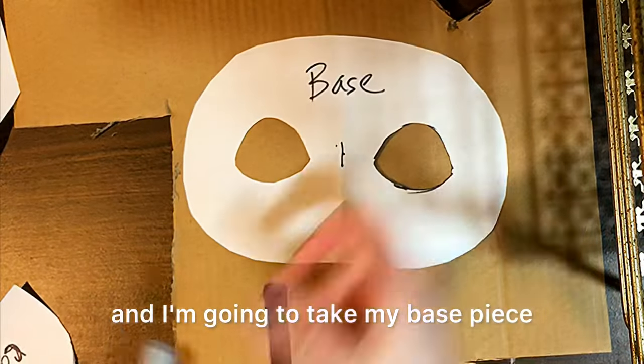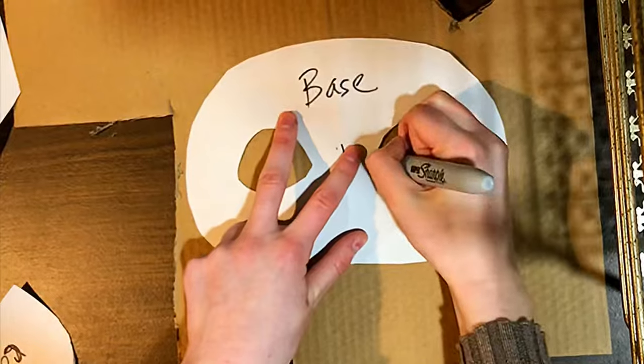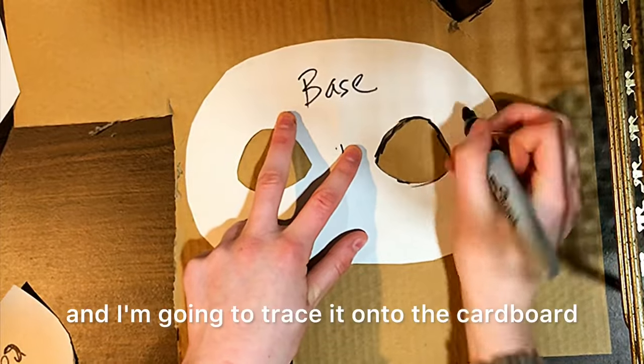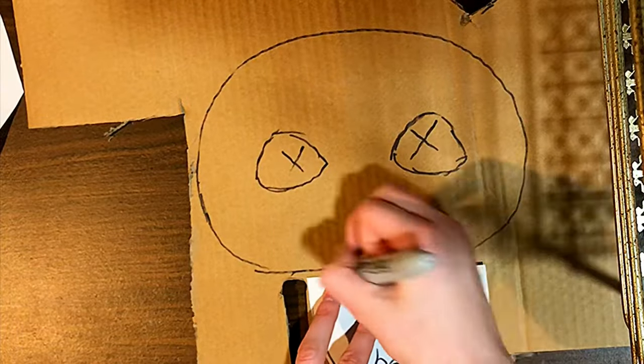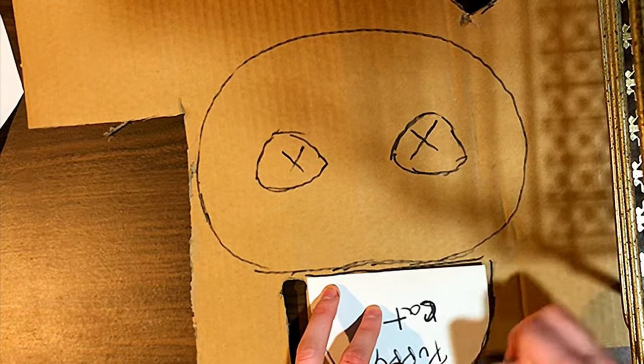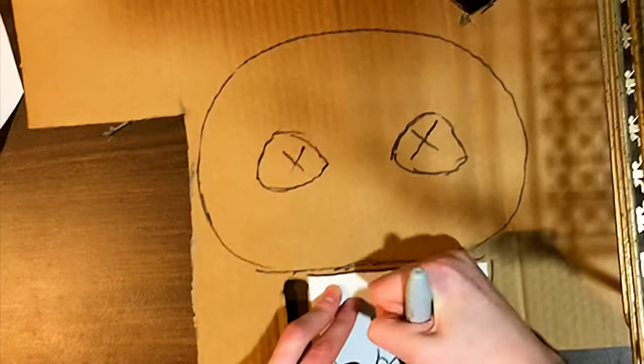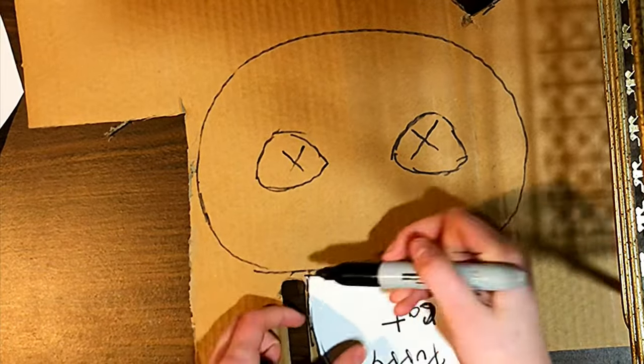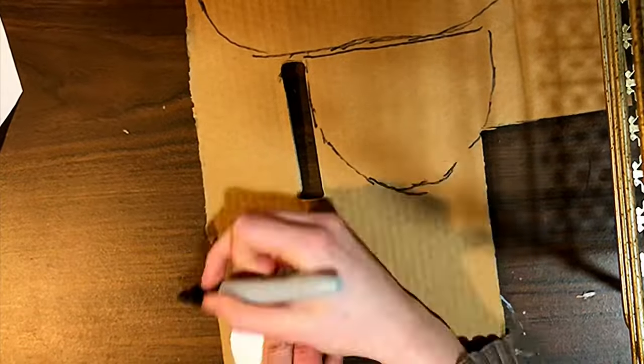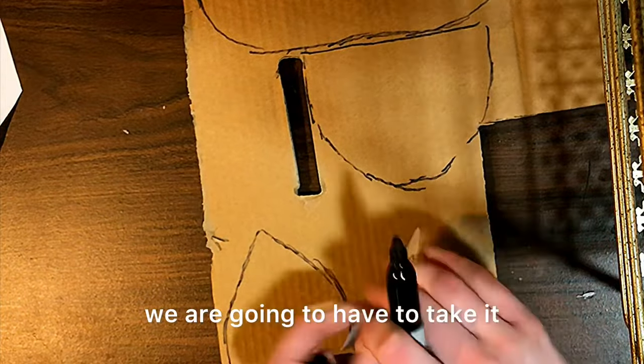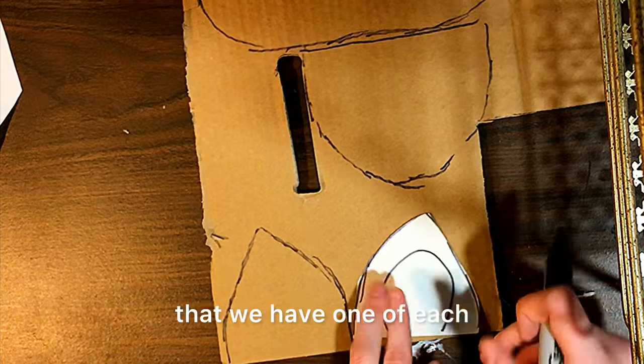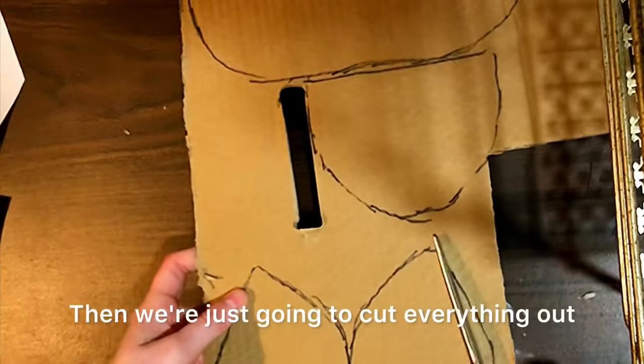I have my cardboard here. And I'm going to take my base piece and I'm going to trace it onto the cardboard. Next, I'm going to trace the muzzle. And, of course, two ears. Since our ears are not symmetrical, we are going to have to take it and flip it to the other side so that we have one of each. Then, we're just going to cut everything out.